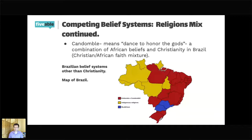In Brazil, Candomblé — meaning 'dance to honor the gods' — is a combination of African beliefs and Christianity, a Christian-African faith mixture. On the map of Brazil, red areas show Umbanda or Candomblé, blue shows Hinduism, and yellow shows indigenous religions — this focuses on Brazilian belief systems other than Christianity, though Christianity is still widespread.